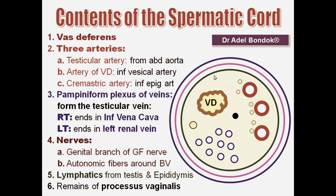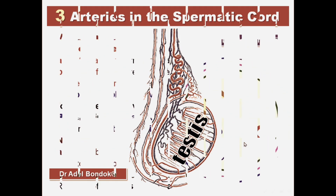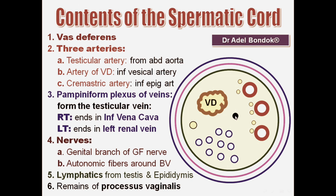So the structures which form the spermatic cord are: vas deferens; three arteries — testicular artery, artery of the vas deferens, cremastric artery; pampiniform plexus of veins, which forms the testicular vein — right testicular vein ends in inferior vena cava, left testicular vein ends in left renal vein; nerves — genital branch of the genitofemoral nerve and autonomic fibers around the arteries; lymphatics from the testis and epididymis; and remains of processus vaginalis.